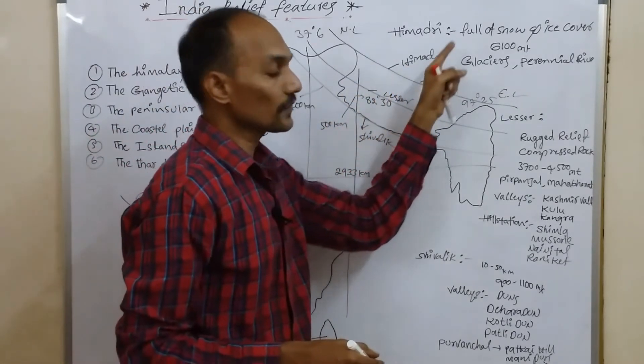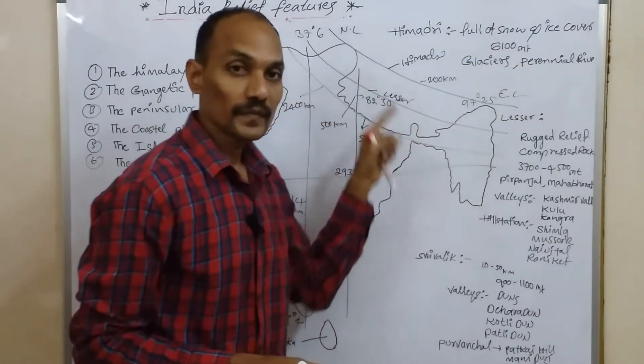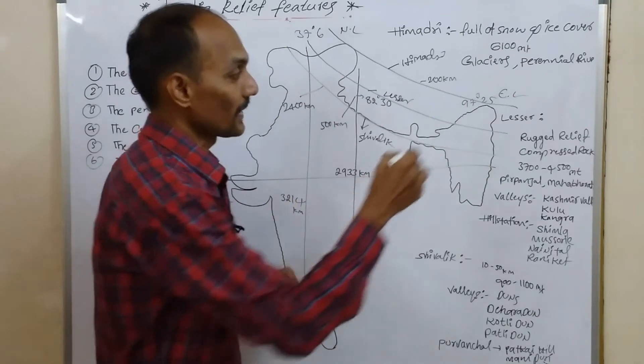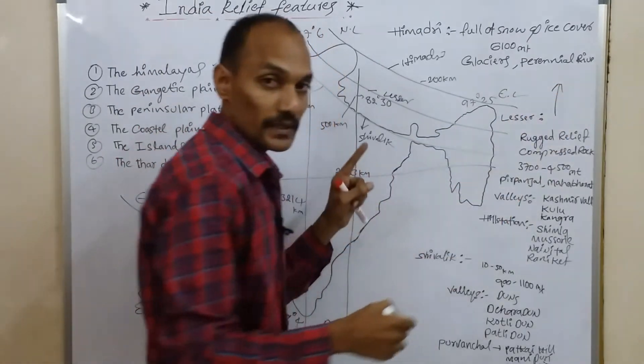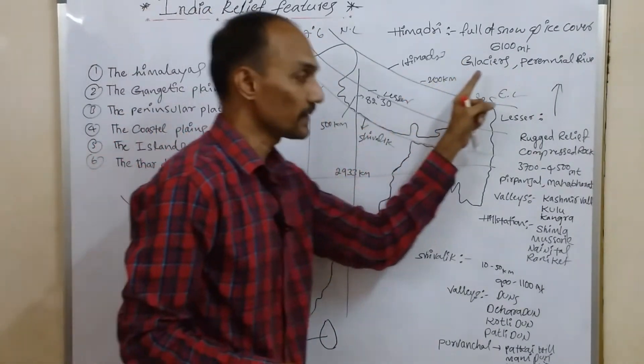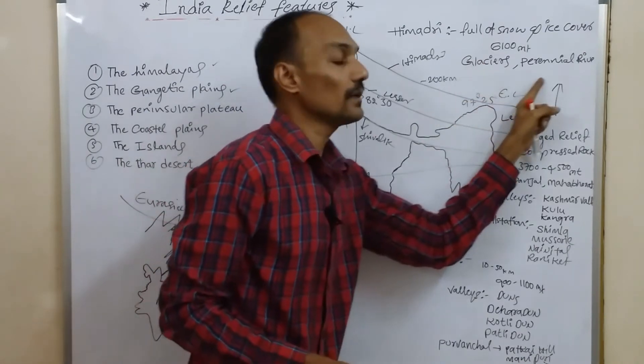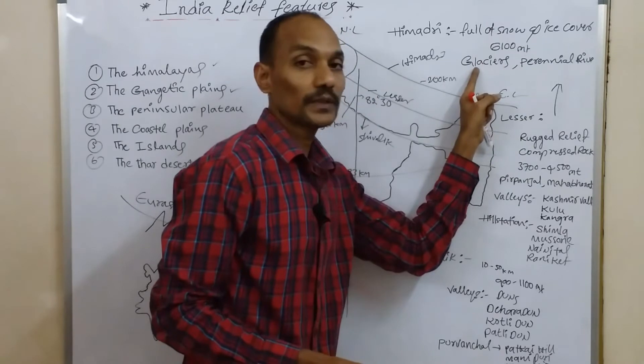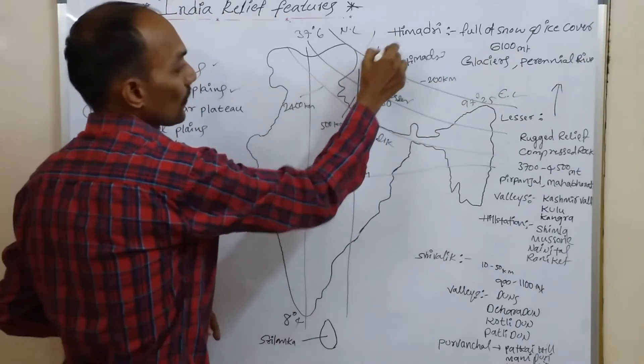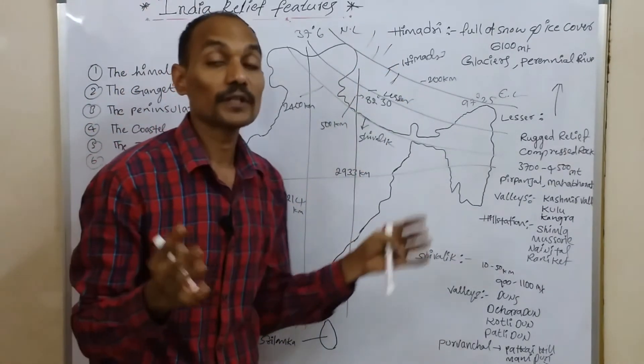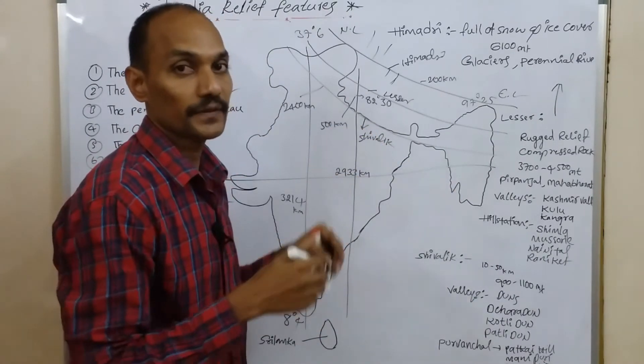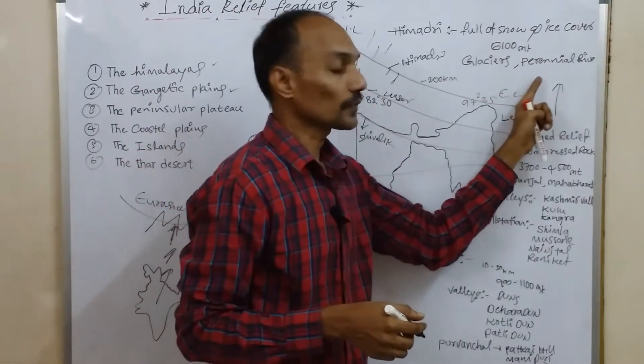First we discuss Himadri. This Himadri region consists of full snow and ice cover. Its elevation, elevation means height or altitude, is 6,100 meters. You can find glaciers in the Himadri region. Glaciers are the source for perennial rivers. How are glaciers formed? Due to continuous snowfall, a large mass of ice forms on the mountain and moves down very slowly. This is called a glacier.